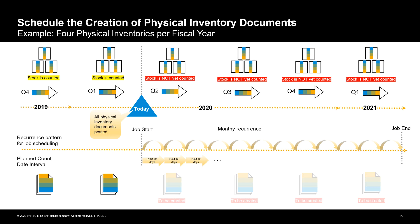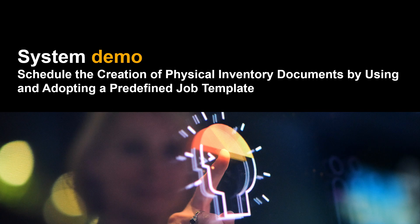According to the recurrence pattern for job scheduling, the planned count date interval is set equal to the next 30 days. As a result, a batch job is started every month to select those materials for physical inventory count that are ready for counting within the next 30 days, ensuring that once a month physical inventory documents will be created. For comparison, if you choose a daily recurrence pattern, a batch job is started every day that selects those materials ready for counting, and in this case you should set the planned count date interval equal to the next one day. Let us now schedule the creation of physical inventory documents by using and adapting a predefined job template in the SAP S4HANA system.